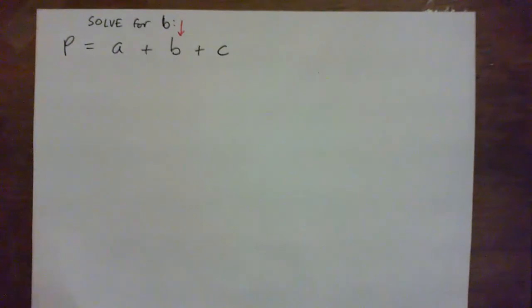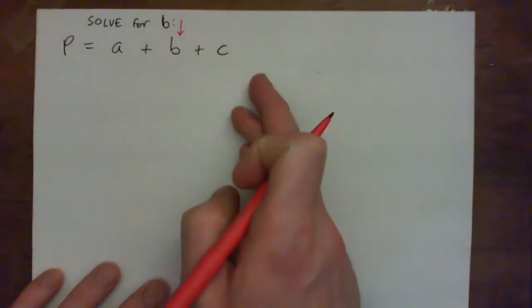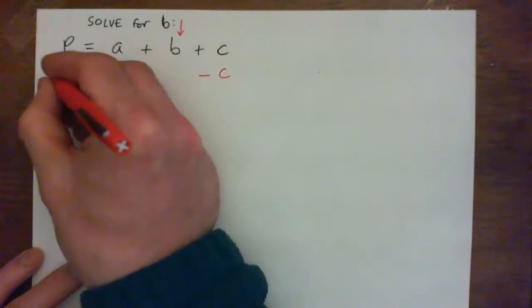So there are two things being done to B. A is being added to it and C is being added to it. We could subtract both of them at the same time. I'm just going to subtract one at a time. So I'm just going to start with subtract C from both sides.